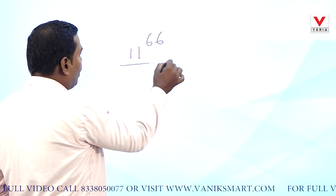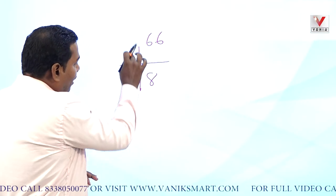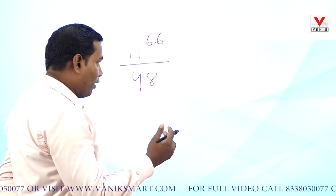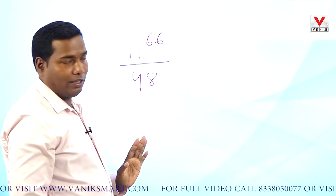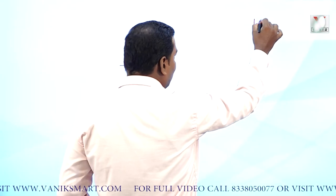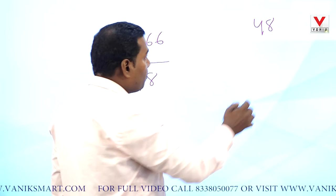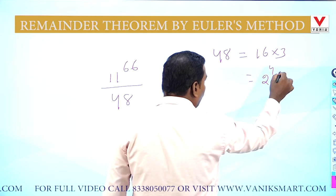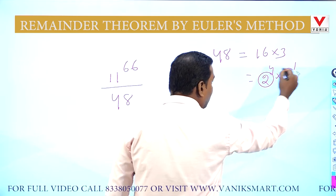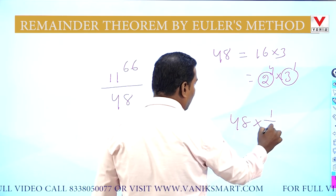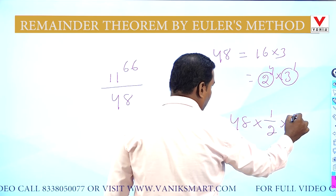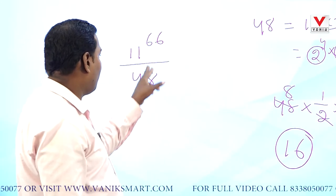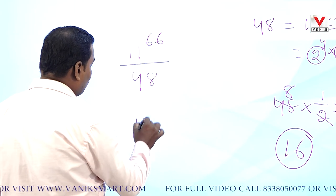Another example: 11⁶⁶ divided by 48 — what is the remainder? Here 11 and 48 have no common factor, so they are co-prime. To find the Euler's number of 48: the prime factors of 48 are 2⁴ × 3, so the prime factors are 2 and 3. The Euler's number is 48 × (1/2) × (2/3) = 16. So 16 is the Euler's number of 48.